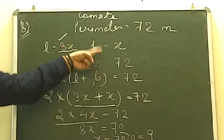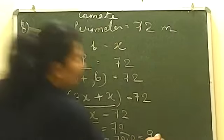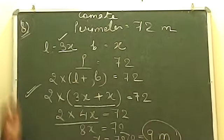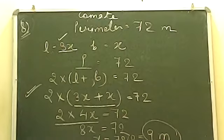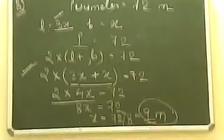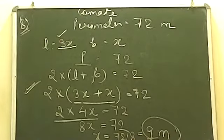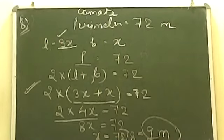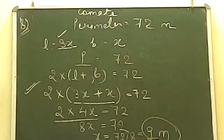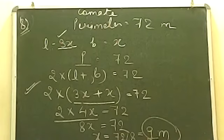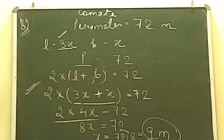X was breadth, so breadth is 9 meters. Now, what will be the length? If breadth is 9, then length equals 3X, which is 3 into 9, giving us 27 meters. This question is also completed.